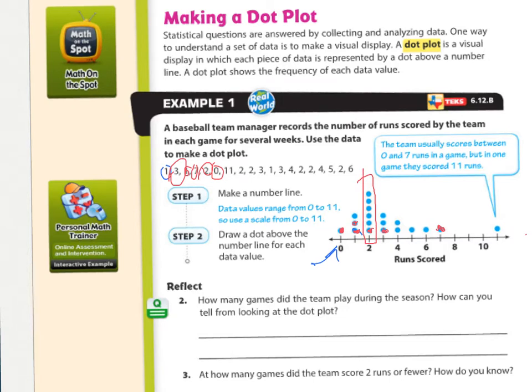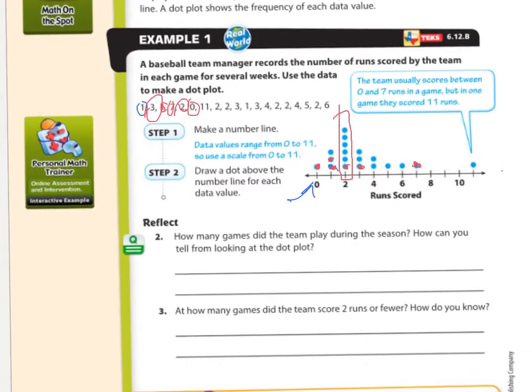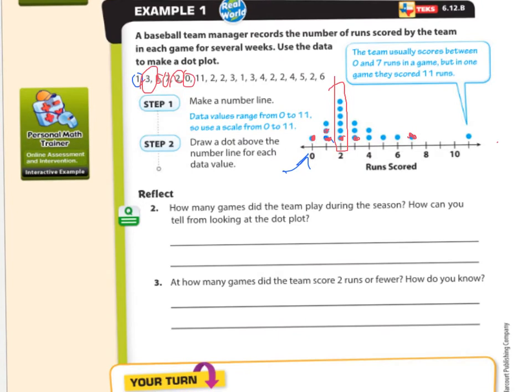But the thing, I mean, you can draw one of these, but it's the analyzing and reflecting on them that we have to be careful about because we have to be good readers and read critically and use those reading skills, strategies that we learn in our language and literature class. So number two, it says, how many games did the team play during the season? How can you tell from looking at the dot plot?